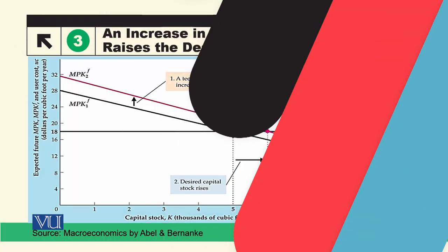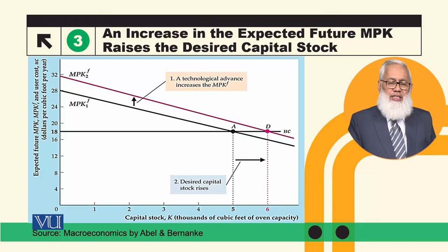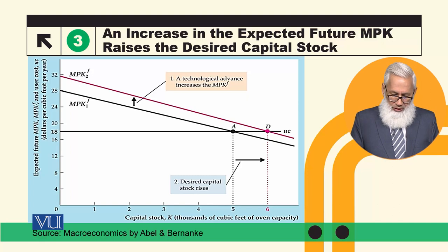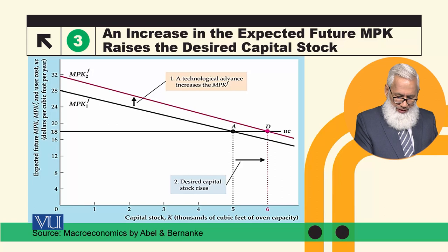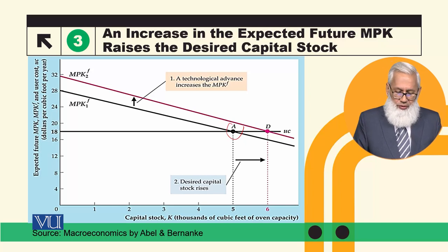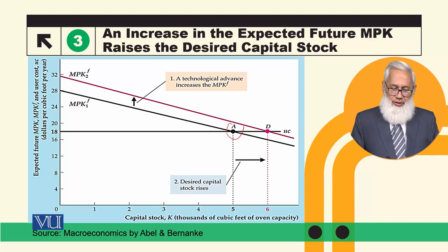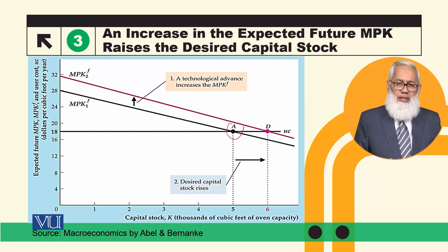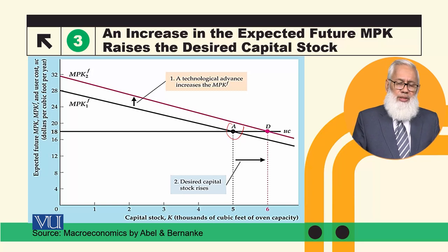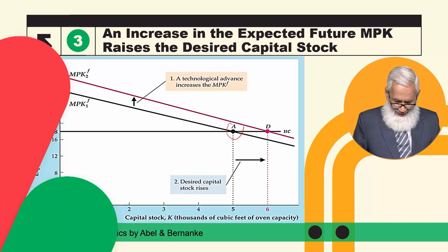اب ہم دوسرا کیس لیتے ہیں جس میں یوزر کاسٹ وہی رہتی ہے لیکن ٹیکنالوجی میں بہتری کی وجہ سے مارجنل پروڈکٹ آف کیپیٹل میں اضافہ ہو جاتا ہے اور اس کا کرو اپر شفٹ ہو جاتا ہے۔ ٹیکنالوجیکل امپرویمنٹ سے پہلے اپٹیمل لیول آف کیپیٹل سٹاک اے پوائنٹ پر تھا۔ کرو کے اوپر شفٹ ہونے کی وجہ سے یہ اے سے ڈی پر شفٹ ہو جائے گا اور کیپیٹل سٹاک میں اضافہ ہو جائے گا۔ اس طرح ڈیزائرڈ کیپیٹل سٹاک وہاں ڈیٹرمن ہوتا ہے جہاں مارجنل پروڈکٹ آف کیپیٹل اور یوزر کاسٹ ایکول ہو جاتے ہیں۔